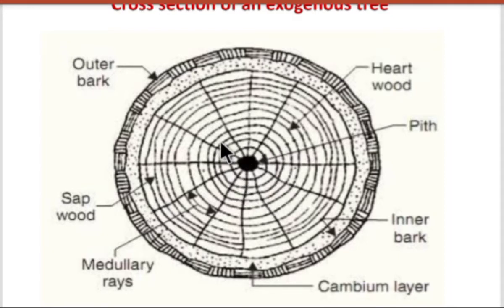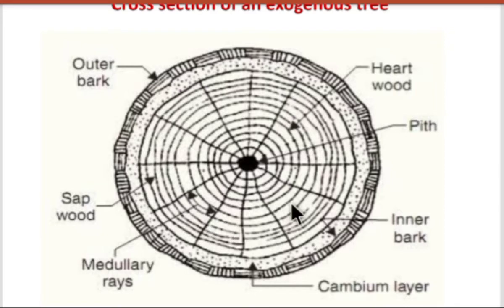Next comes annular rings. These rings you can see are called annular rings. These rings predict the age of the trees. These circles or rings are called annular rings.